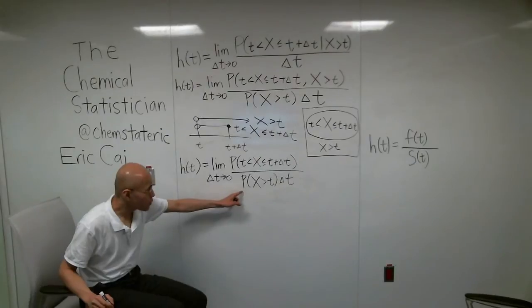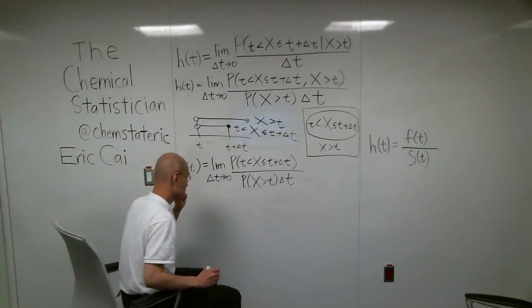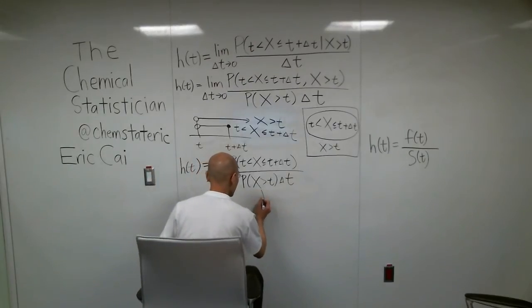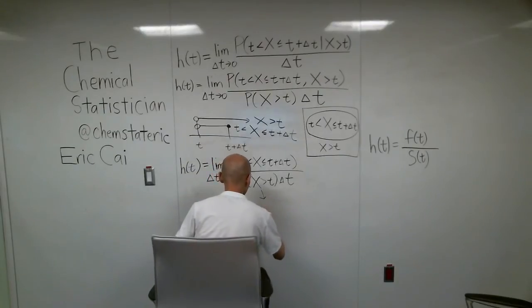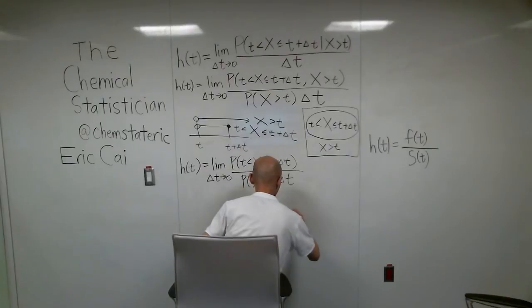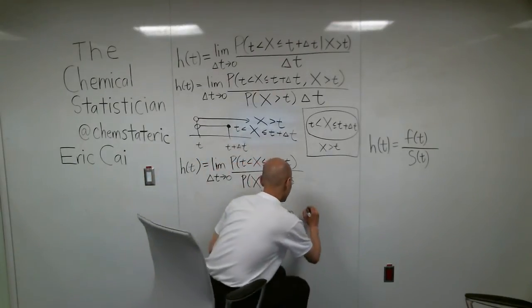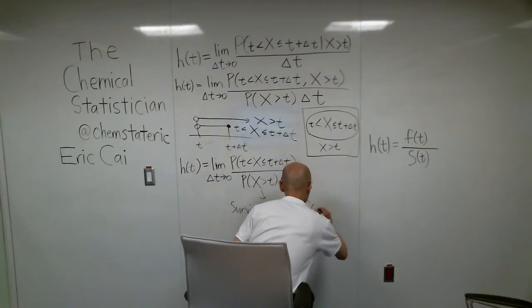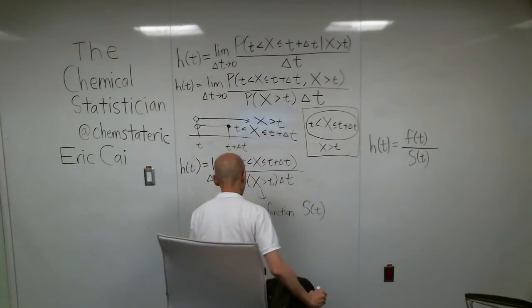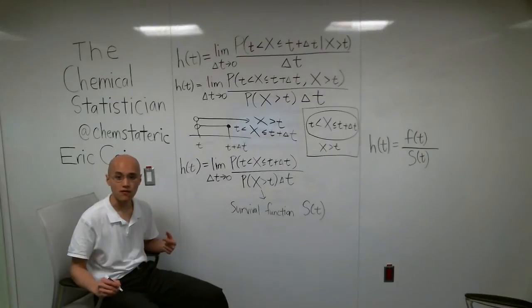Now, this probability down here has a special name. It's called the survival function, and it is usually denoted by S of t. I hope that you can recognize that the survival function is simply one minus the cumulative distribution function.